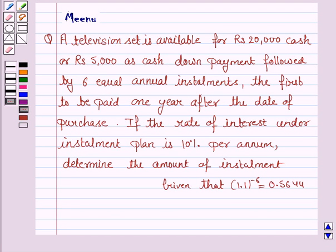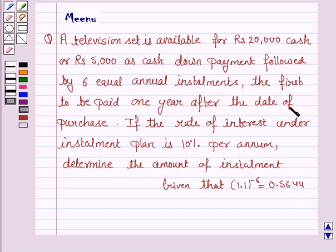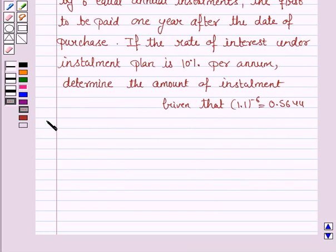Hello and welcome to the session. Let's work out the following problem. A television set is available for rupees 20,000 cash, or rupees 5,000 cash down payment followed by six equal annual installments, the first to be paid one year after the date of purchase. If the rate of interest under the installment plan is 10% per annum, determine the amount of each installment.